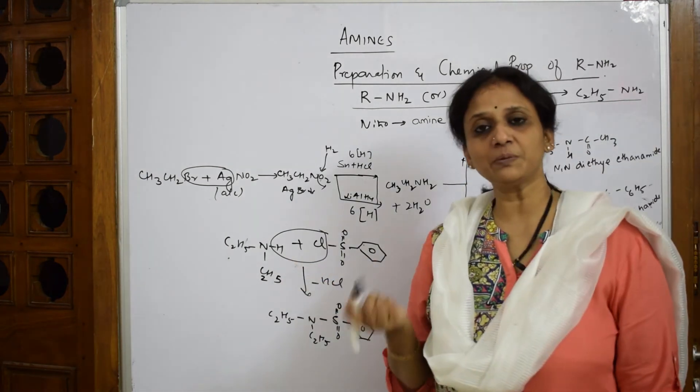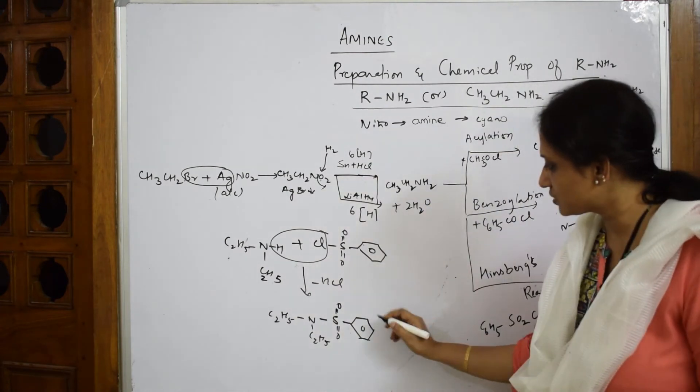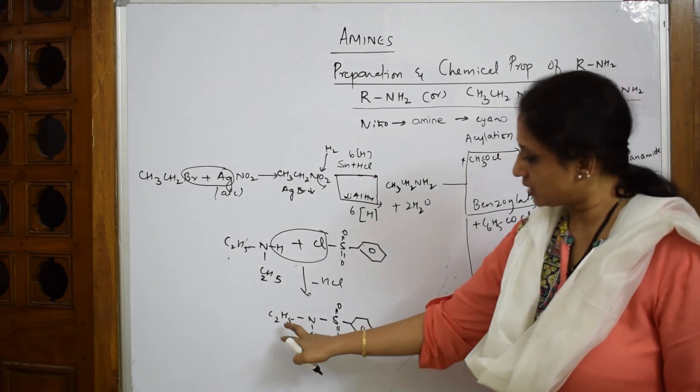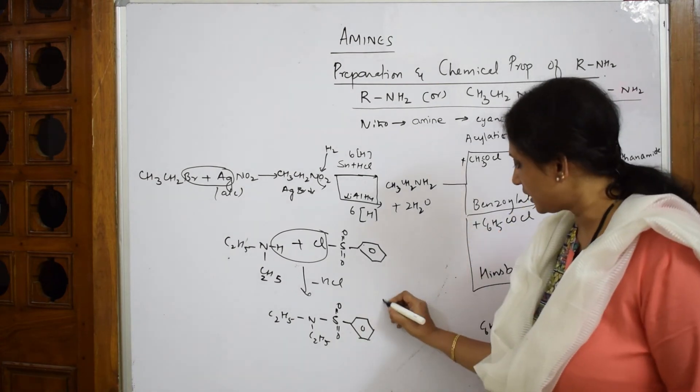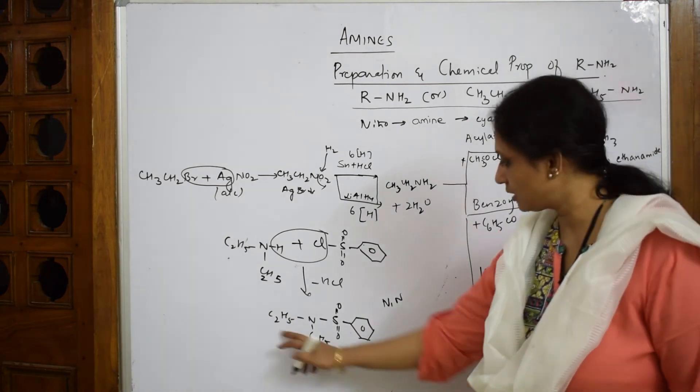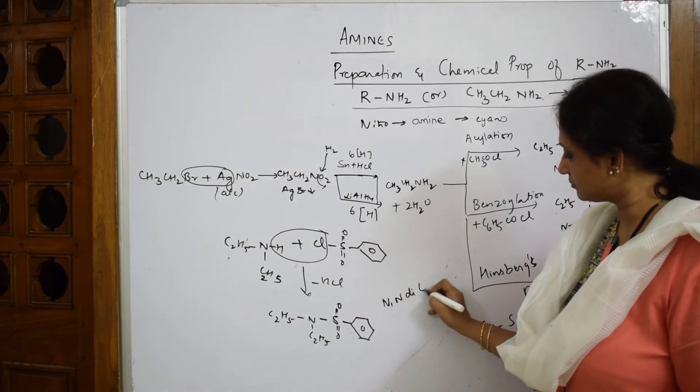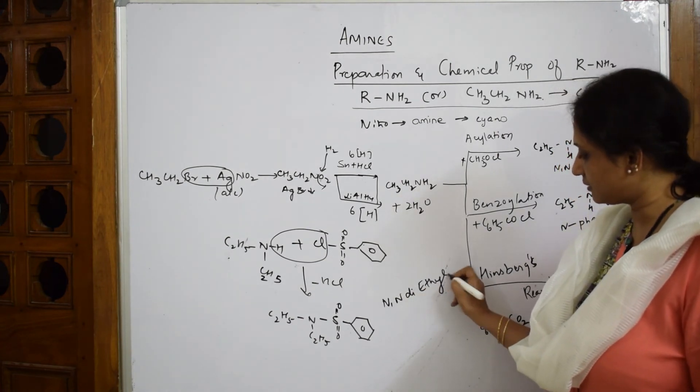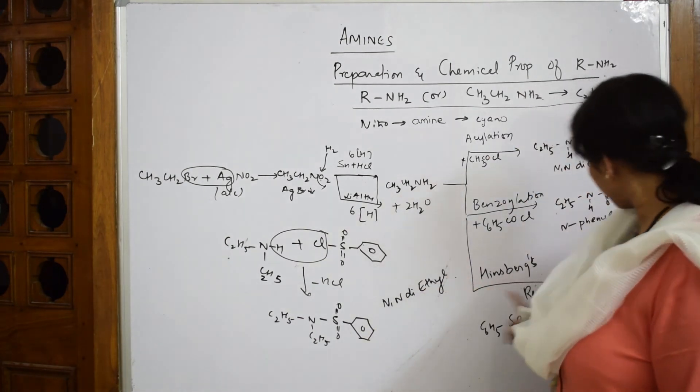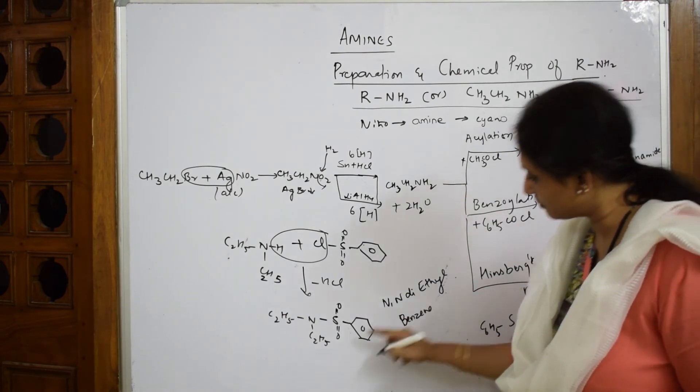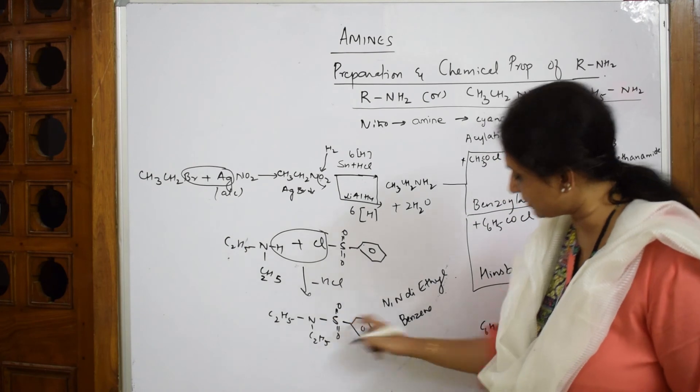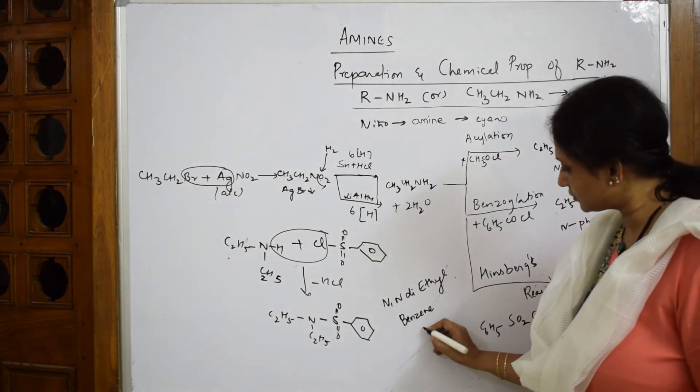How do you name this? You have two terminals, two ethyl groups. N,N-diethyl benzene sulfonamide. I don't have place here, so benzene sulfonamide.